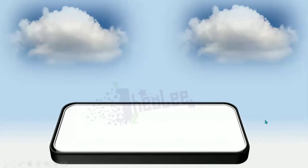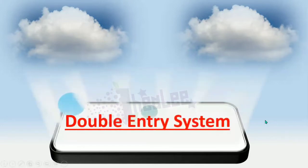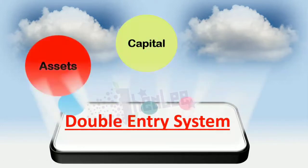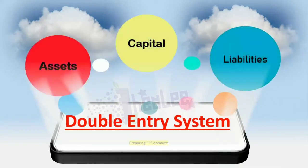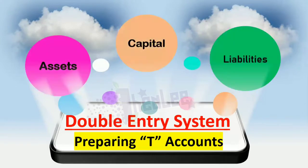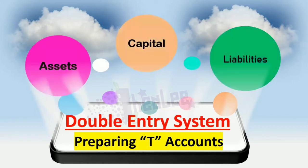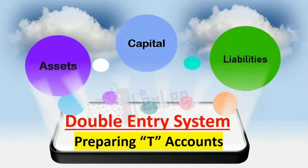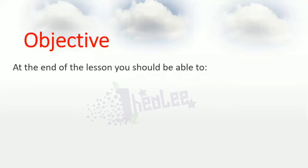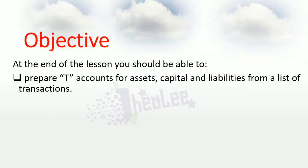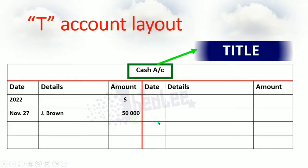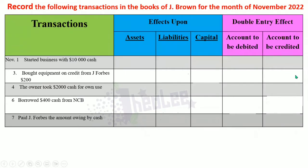Today we're going to look at another aspect of the double entry system for assets, capital, and liabilities — that is preparing T-accounts. In our previous lesson, we looked at an introduction to the double entry system where our focus was on the double entry rules. If you missed that lesson, the link is in the description below. That lesson is important for understanding this one, where we'll be preparing T-accounts for assets, capital, and liabilities from a list of transactions. We're going to look at an example in preparing ledger accounts — T-accounts.